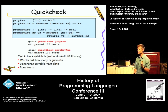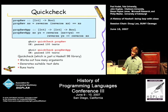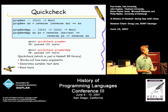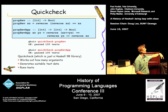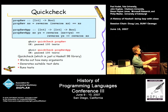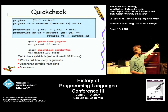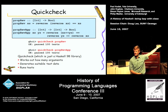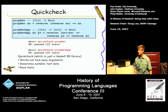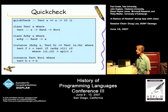Clearly something interesting is happening, because QuickCheck has to make test cases to work. In the case of the first one, it had to make test cases that were lists of integers. In the second one, it had to make test cases that were pairs of lists of integers, because there are two arguments.